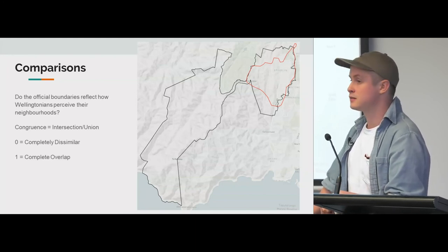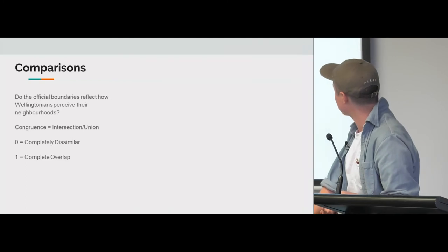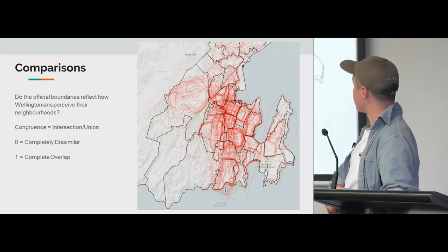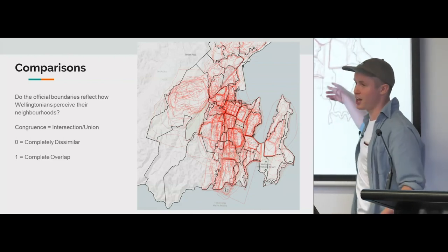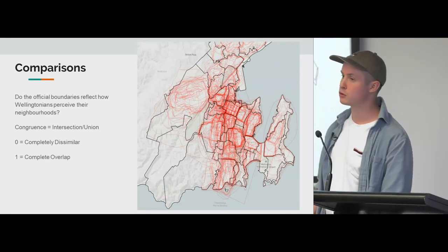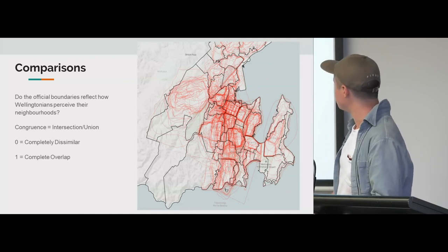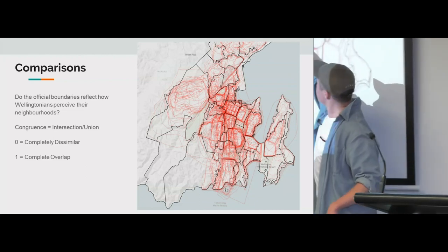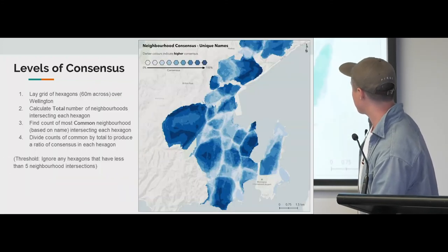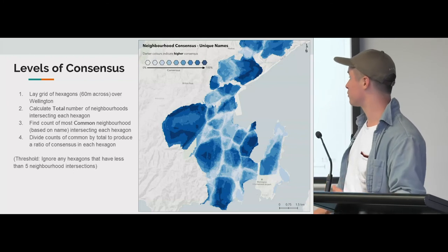Were there any patterns in the areas that people drew lines along — geographic barriers? A lot of them were drawn along main roads, so main arterial routes were the most common. Another cool example is down where the airport is — the airport is quite a hard boundary, so a lot of people drew that as the boundary for their suburb, which reflects the official boundary. Roads and tunnels were quite strong — the Mount Victoria tunnel is quite a clear point where neighbourhoods sort of end, because it's a hard boundary you traverse through.